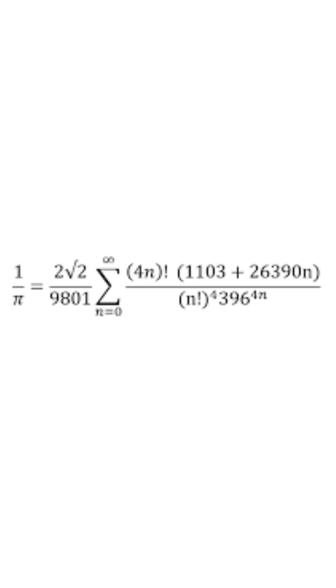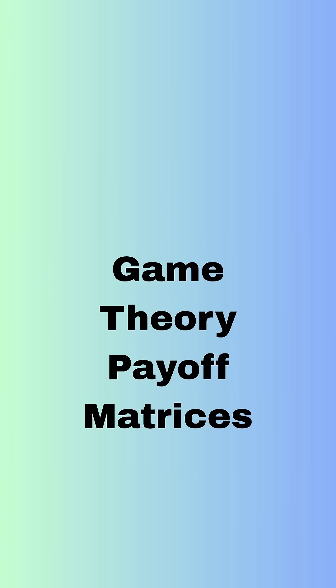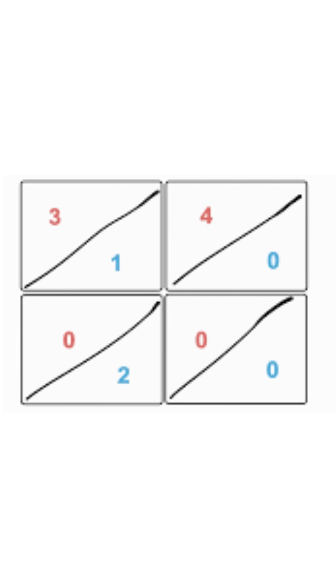Game theory payoff matrices: you see life as a strategic battle where everyone is either winning or losing, especially in relationships.